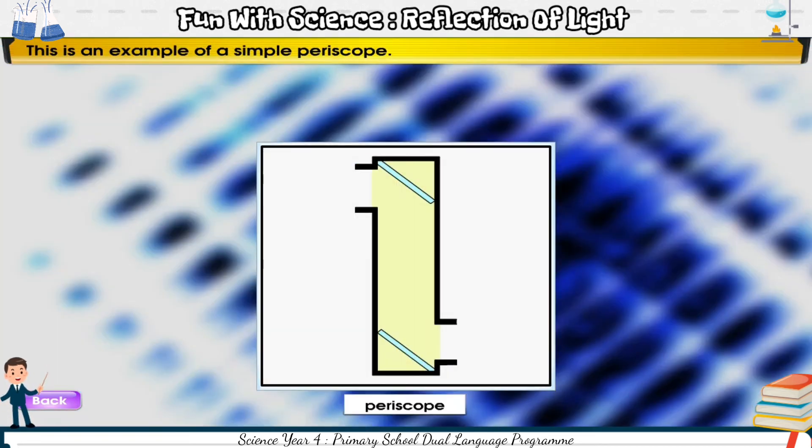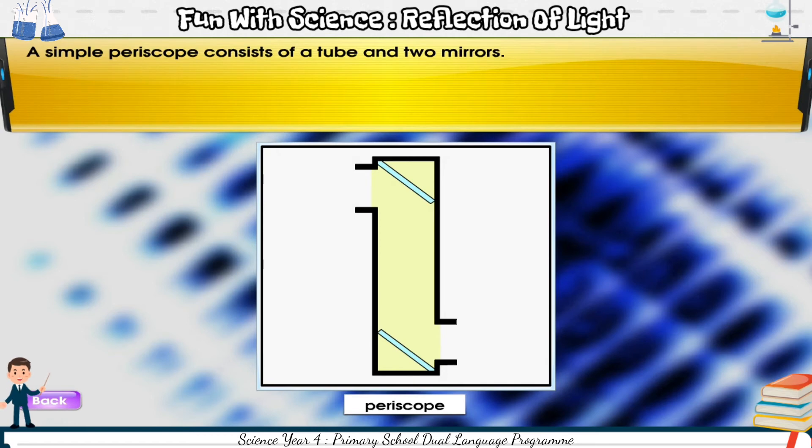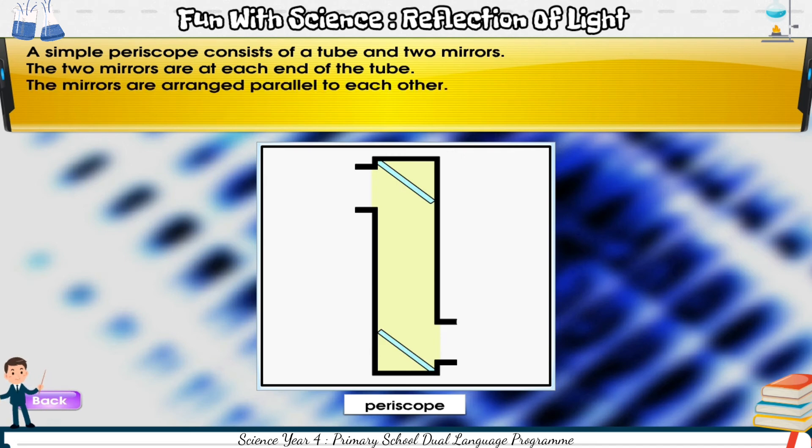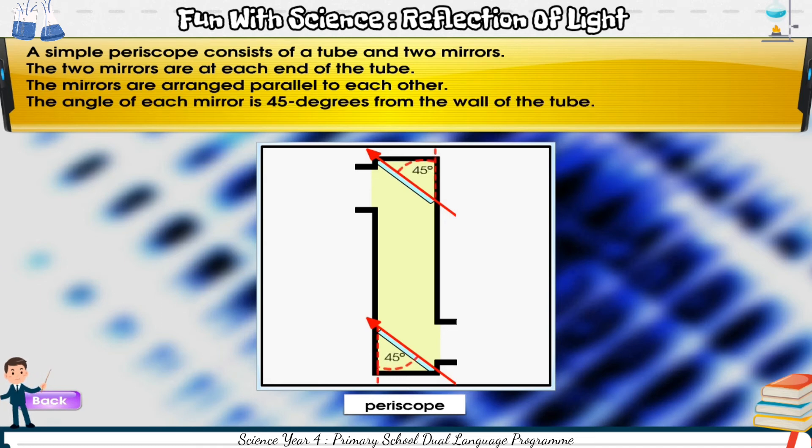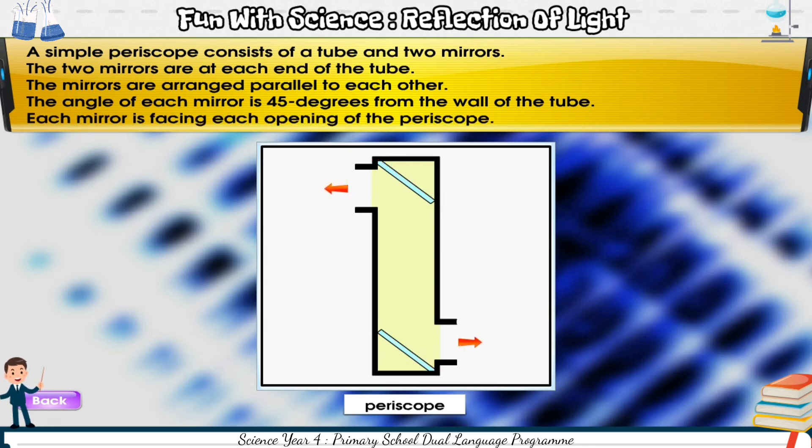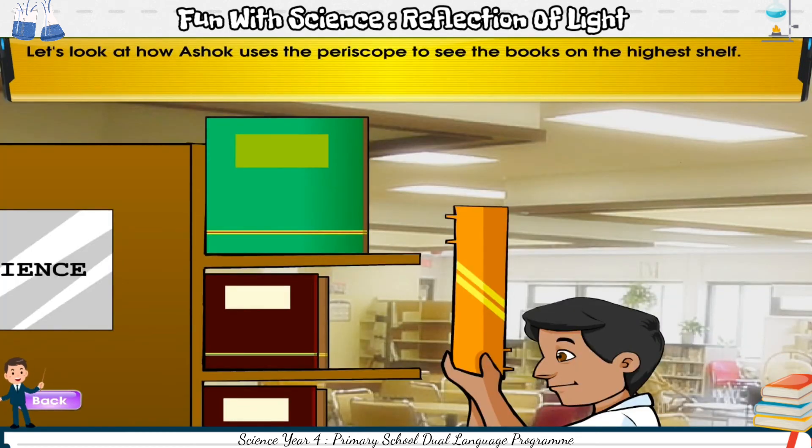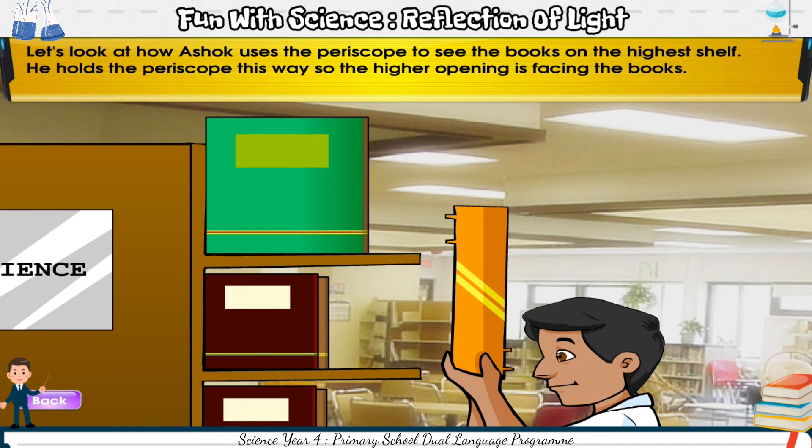This is an example of a simple periscope. A simple periscope consists of a tube and two mirrors. The two mirrors are at each end of the tube. The mirrors are arranged parallel to each other. The angle of each mirror is 45 degrees from the wall of the tube. Each mirror is facing each opening of the periscope. Let's look at how Ashok uses the periscope to see the books on the highest shelf. He holds the periscope this way so the higher opening is facing the books. He looks through the other opening to see the books.